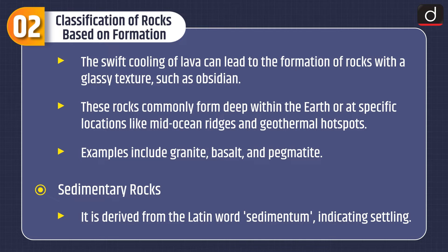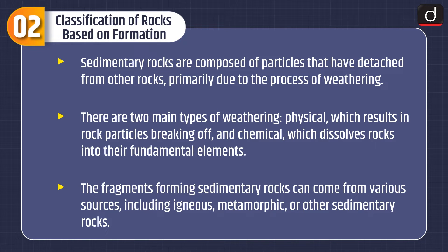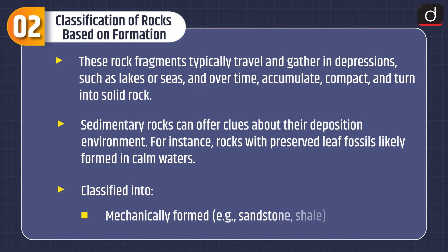Next are sedimentary rocks, derived from the Latin word sedimentum, indicating settling. Sedimentary rocks are composed of particles that have detached from other rocks, primarily due to weathering. There are two main types of weathering: physical, which results in rock particles breaking off, and chemical, which dissolves rocks into their fundamental elements. Rock fragments typically travel and gather in depressions such as lakes or seas, and over time accumulate, compact, and turn into solid rock.